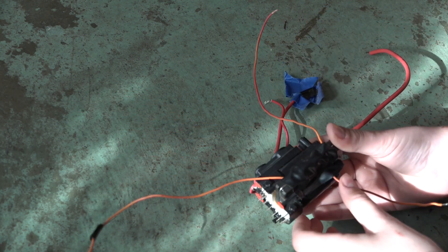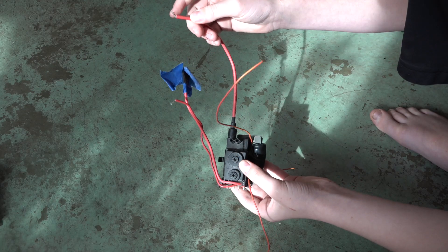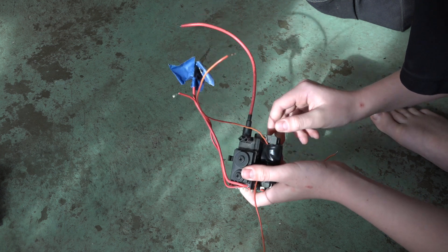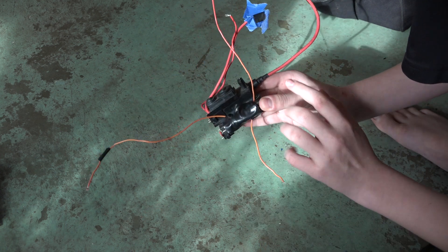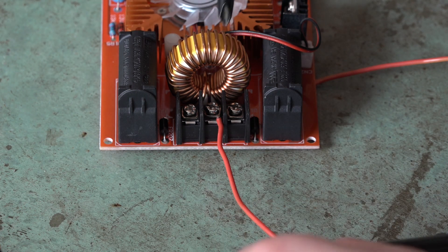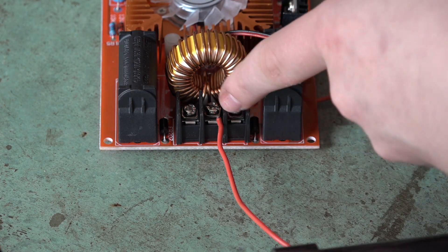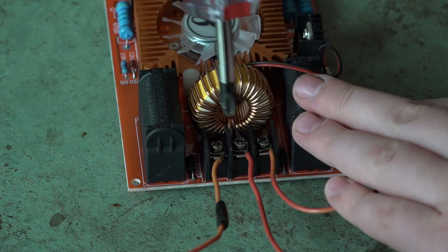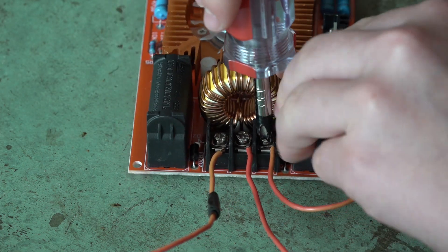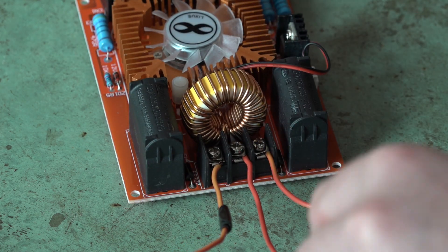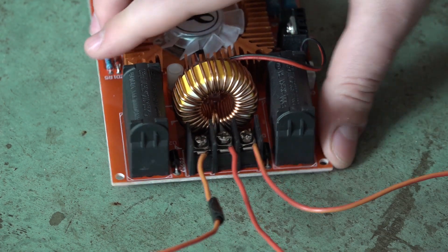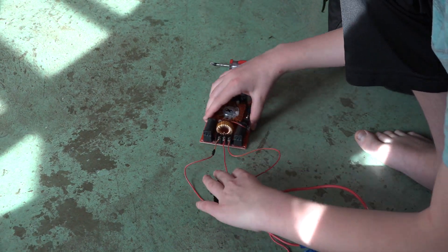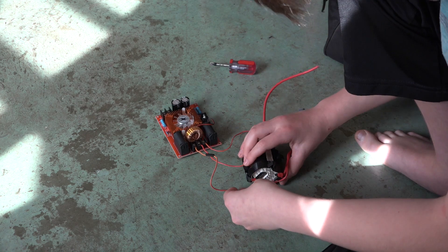Now we've got our flyback transformer wound, now this will be our high voltage output. One of these pins will be our high voltage ground and these three wires will hook up to the ZVS driver. Now we want to connect our center tap wire to the center connector here on the output. There we go. So now you've got our wires hooked up to the flyback transformer and I want to just loop those around so they aren't hitting our high voltage output.